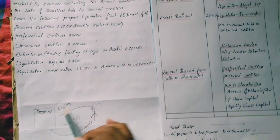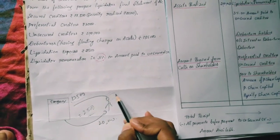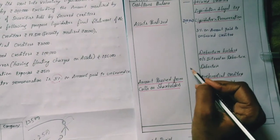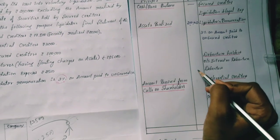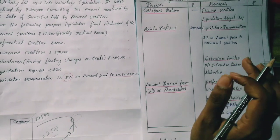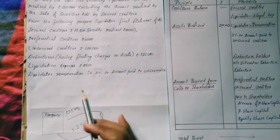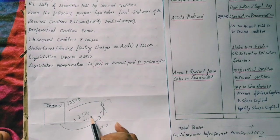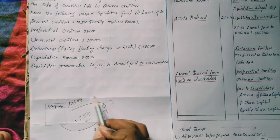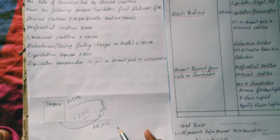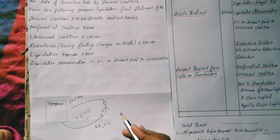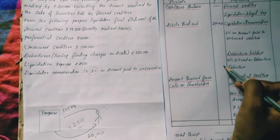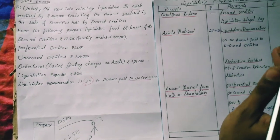The difference is Rs.20,000 minus Rs.17,500 = Rs.2,500 surplus from secured creditors. This Rs.2,500 surplus from secured creditors is recorded. When the company winds up, all Rs.20,000 was realized; we paid Rs.17,500, and the remaining Rs.2,500 goes back to the company. This is the easy method.